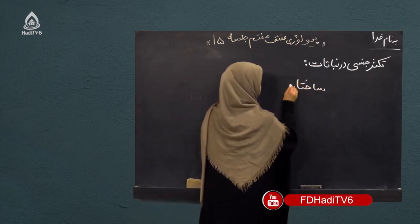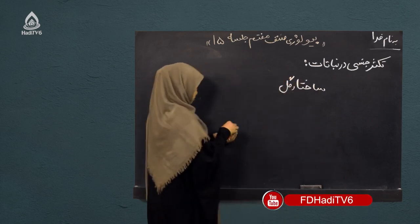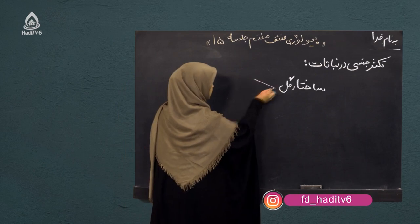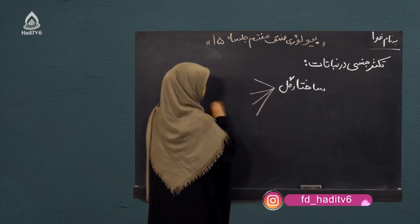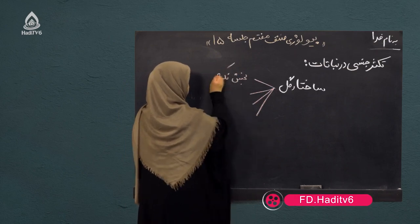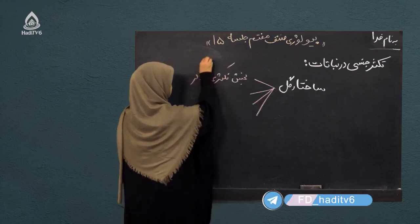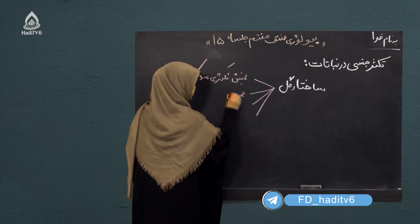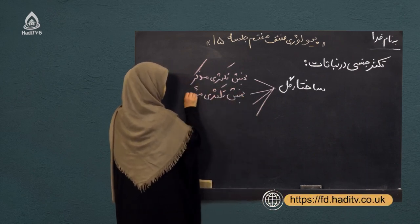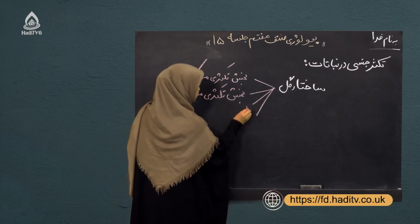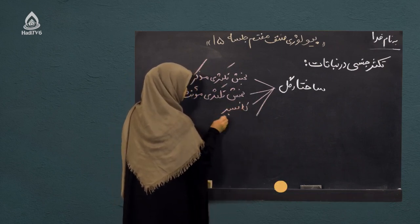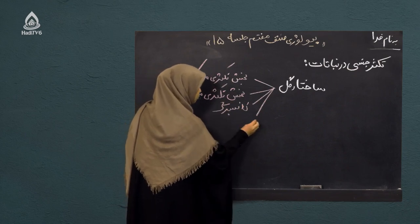حالا به بخش پایانی درس می‌رسیم. ما یک بخش به تخته می‌رویم و ساختار گل را با هم می‌خوانیم. گل‌های کامل هم بخش مزکر دارند هم بخش مؤنس. ساختار یک گل شامل چهار بخش است: بخش تکثری مزکر، بخش تکثری مؤنس، کاسبرگ و گلبرگ.